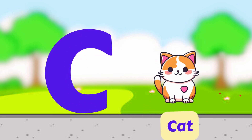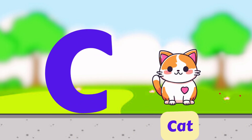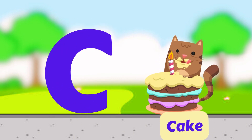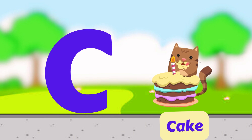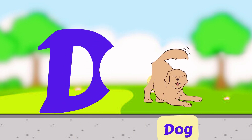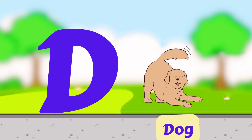C is for Cat. C, C, Cat. C is for Cake. C, C, Cake. D is for Dog. D, D, Dog.